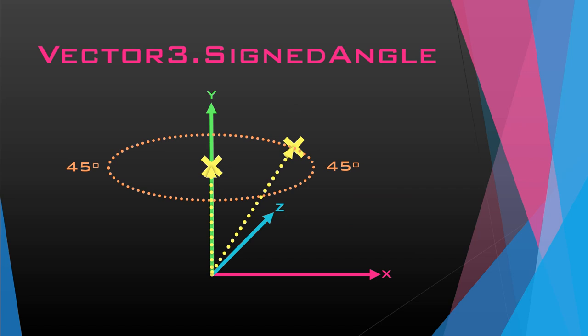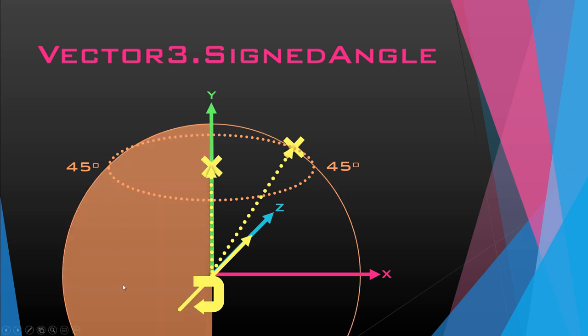Next is Vector3.SignedAngle. It's a little bit different — it takes a 'from', a 'to', and also an axis. The axis is the point around which the angles all rotate. Let's say we put our axis as transform.forward — so this is plus Z, we're looking forward. You start at zero on Y. Anything on the negative Y axis is going to be 180. Once we cross over that 180 around that axis, it becomes negative. So on the left-hand side of the Z axis, we're going negative — ending up as a giant circle, and everything on the left would be negative.